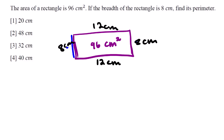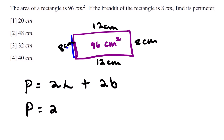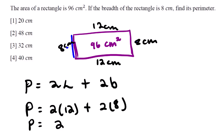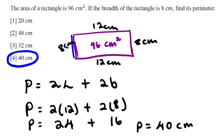From here we can calculate our perimeter. We say our perimeter is 2l + 2b: 2 of 12 plus 2 of 8, which gives us 24 plus 16. Then we have our perimeter equals 40 centimeters. So the correct option here is option 4.